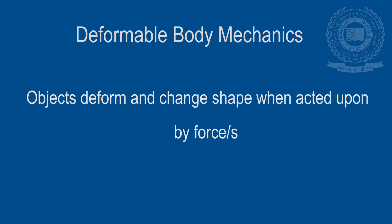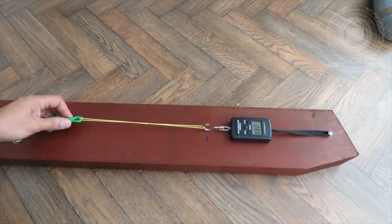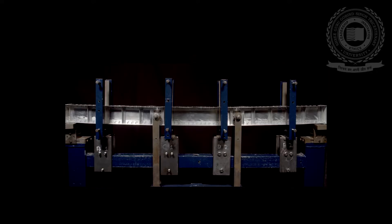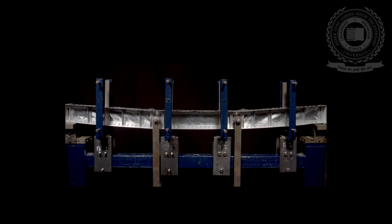In deformable body mechanics, we deal with objects that tend to deform under the action of a force or set of forces. For example, if we apply a tensile force to a rubber band, it will stretch and we observe an increase in length. Similarly, a beam under a particular loading condition shows deflection and so a change in shape.